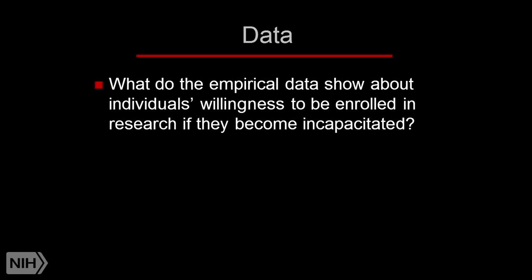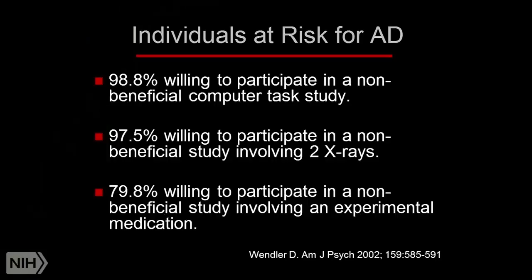That raises this question — one of the things I try to do is identify places where empirical data would be helpful in evaluating and resolving ethical issues in clinical research. Here we're worried about unwanted enrollment — enrolling people in research they wouldn't have wanted to enroll in if they'd been able to make their own decisions. One way to get a grasp on that is to ask what people think about enrolling in research if they become incapacitated. This is a study we did about 12 years ago with investigators here, focusing on people at risk for Alzheimer's disease — first-degree family members of people diagnosed with probable Alzheimer's. A lot of them were willing to be in research even if they lost the ability to make their own decisions.